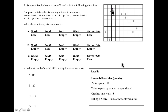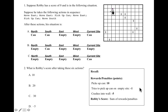The quiz has two questions. The first says: look at this situation, and suppose that Robby has a score of zero so far. He takes some actions — move east, move east, pick up can, move east, pick up can, move south. He takes those six actions. You have to answer what his situation is after those six actions and what his score is. Here's a reminder of what the scoring process is.